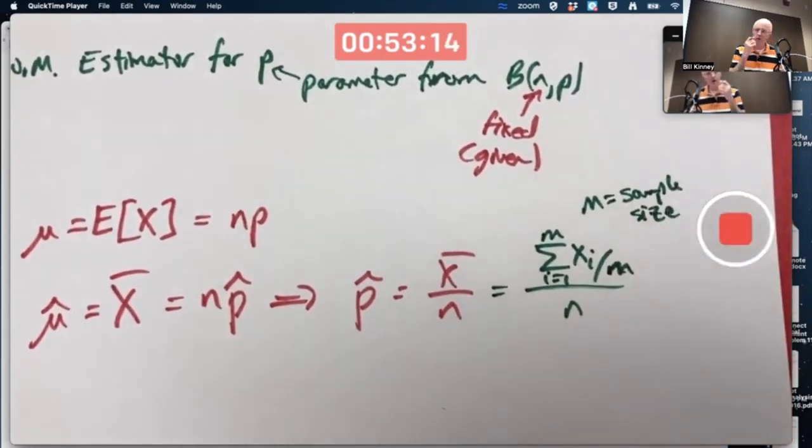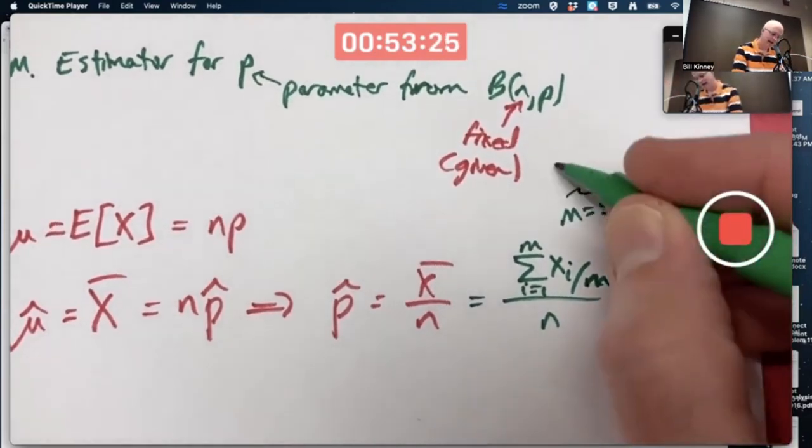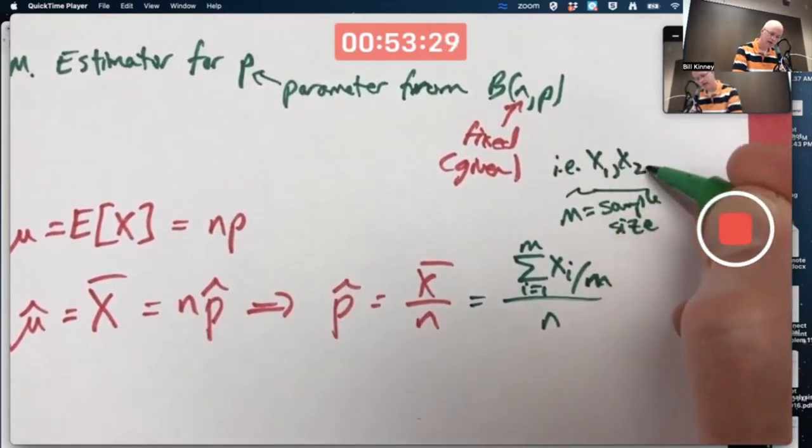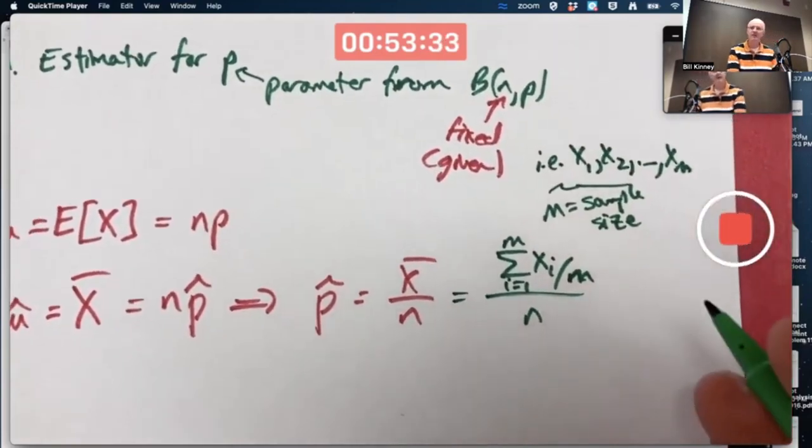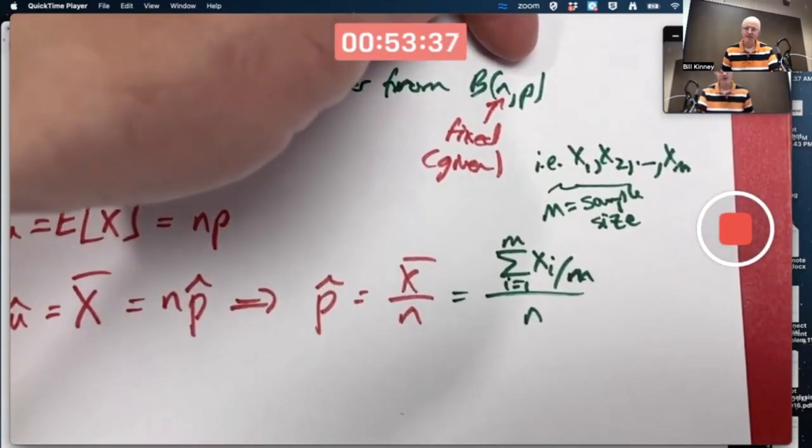So M is the sample size here. Not for your binomial random variable, but for the random sample, capital X₁, capital X₂, through capital Xₘ. That is, our random sample is capital X₁, capital X₂, through capital Xₘ. Each of these variables has a binomial distribution with parameters N and P.